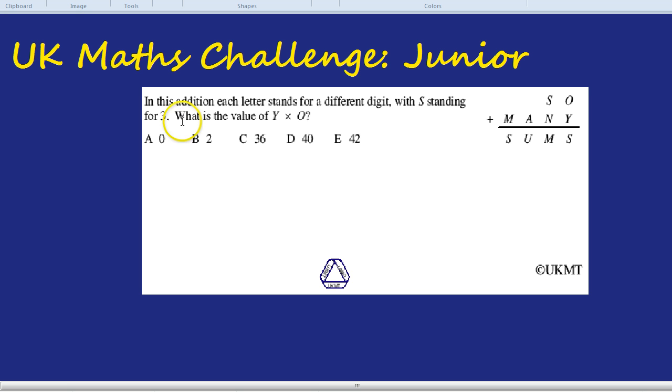Here's the question. In this addition, each letter stands for a different digit, with S standing for 3. What is the value of Y times O? 0, 2, 36, 40, or 42.